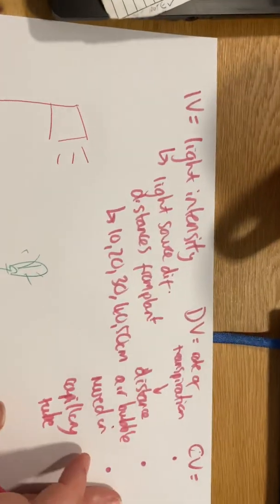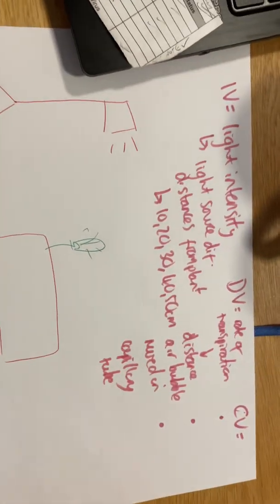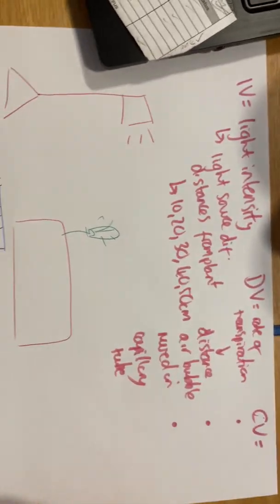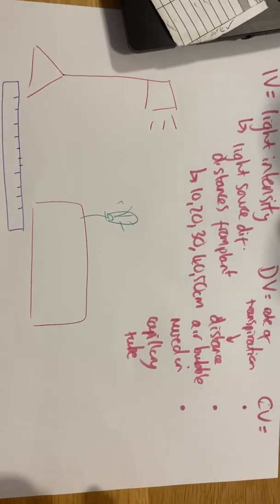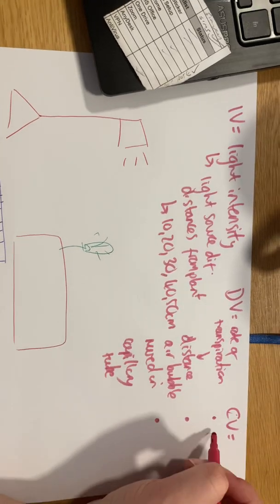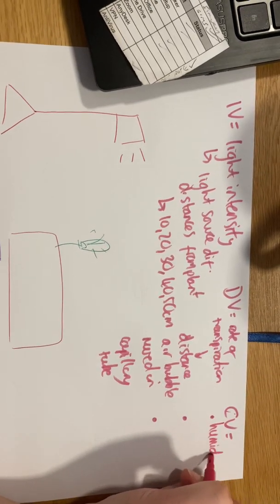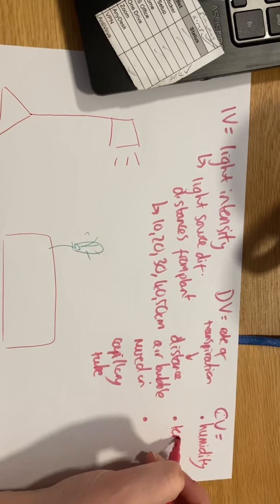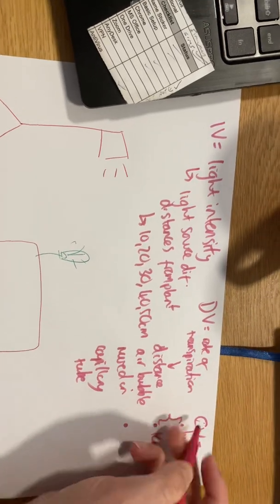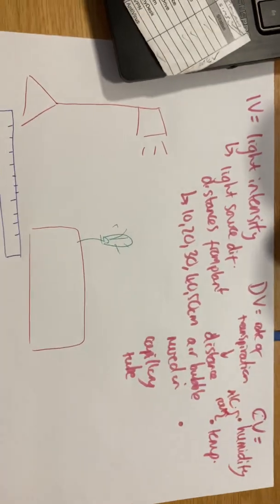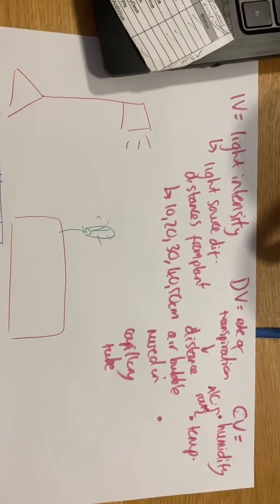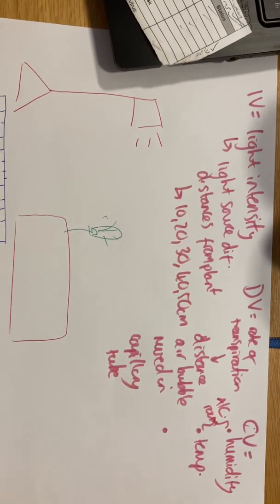For our control variables, remember you need three. What we should really be trying to do here is linking our other factors that affect transpiration. The first one is going to be humidity, and our second one could be temperature, both of which can be controlled by using an air-conditioned room.